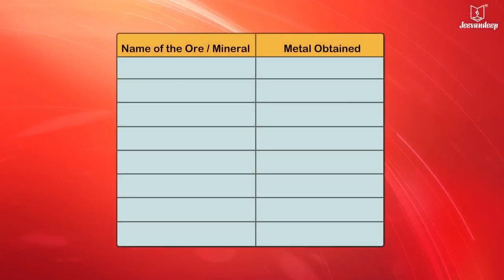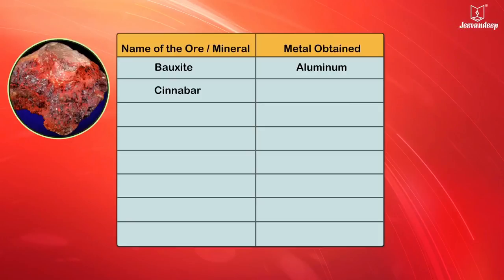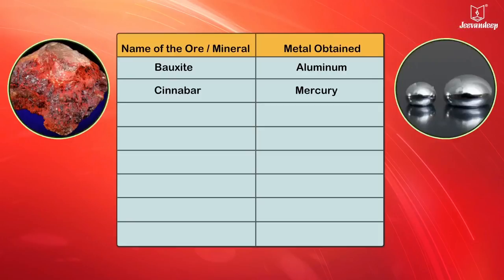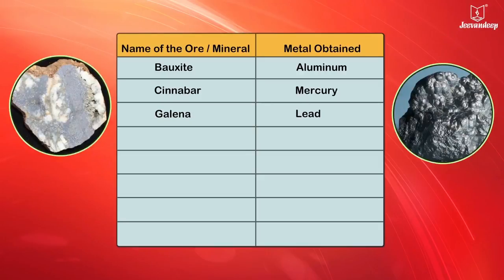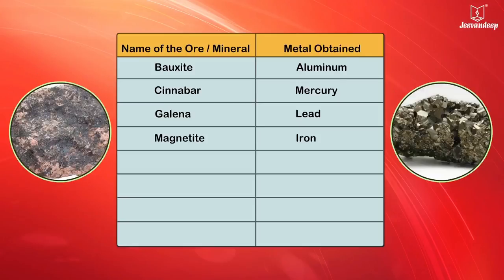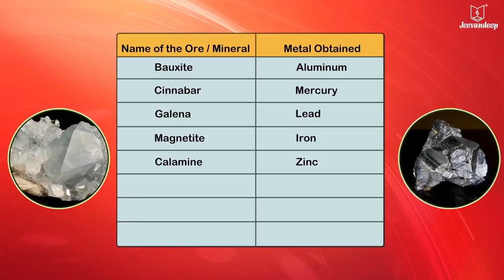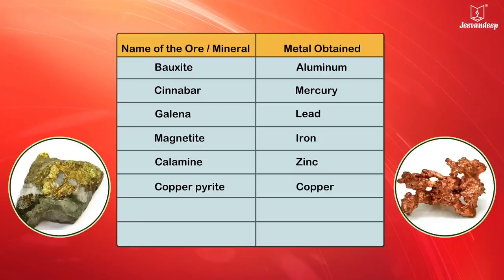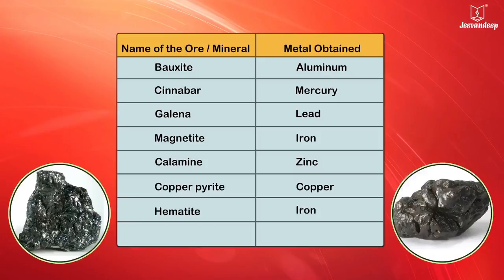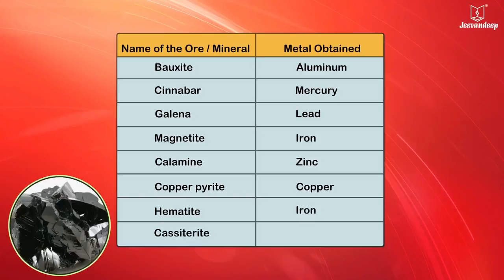The name of the ore or mineral and its metal: Bauxite — aluminium; Cinnabar — mercury; Galena — lead; Magnetite — iron; Calamine — zinc; Copper pyrite — copper; Hematite — iron; Cassiterite — tin.